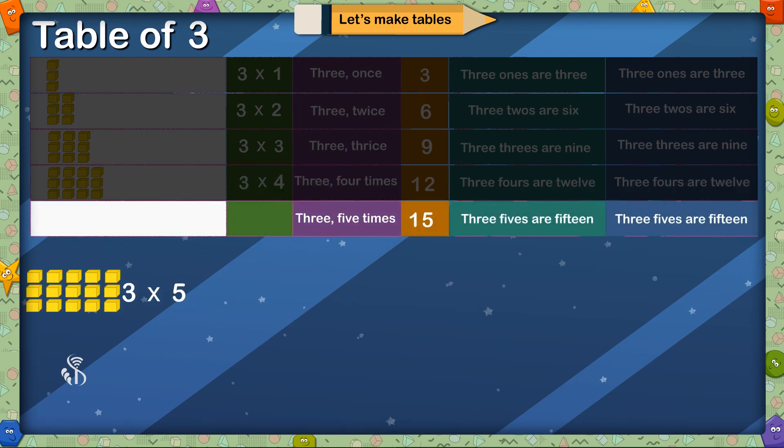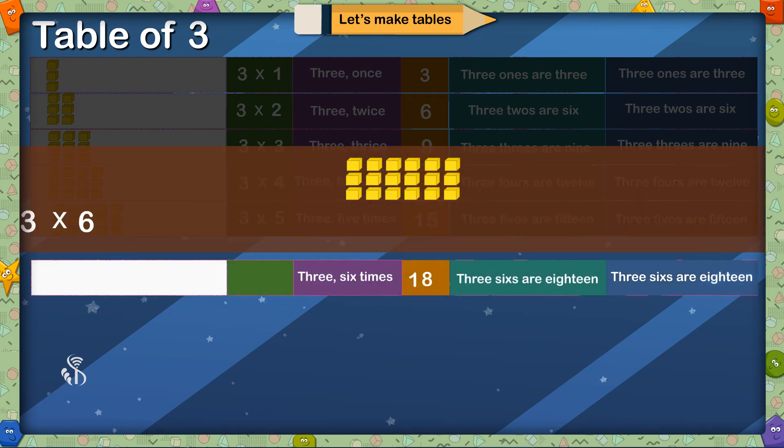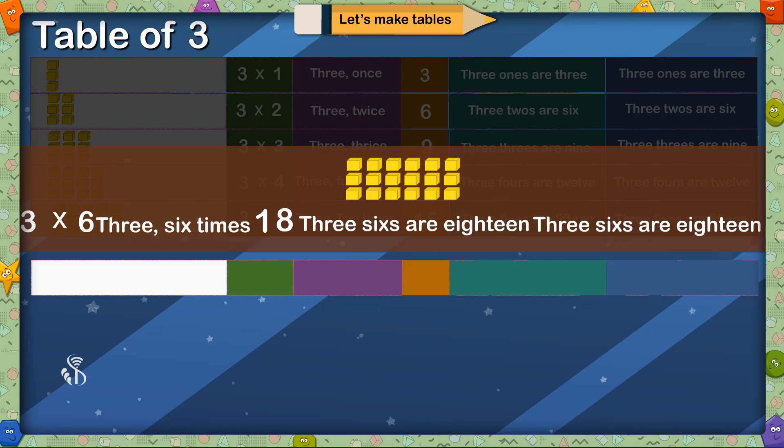3 multiplied by 5, 3 5 times is 15, 3 5s are 15. 3 multiplied by 6, 3 6 times is 18, 3 6s are 18.